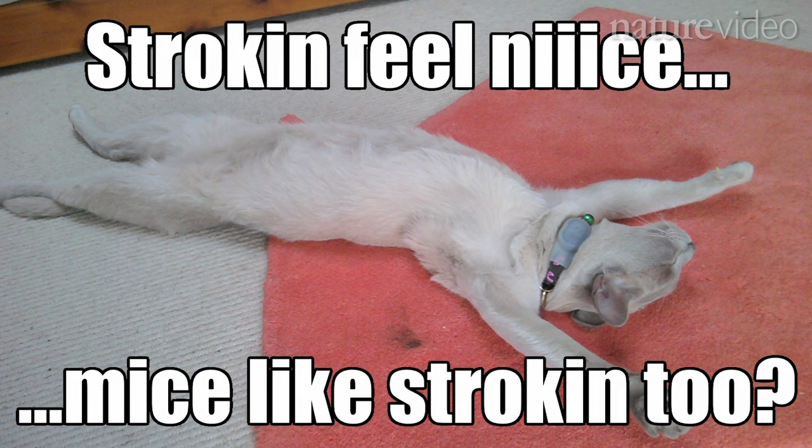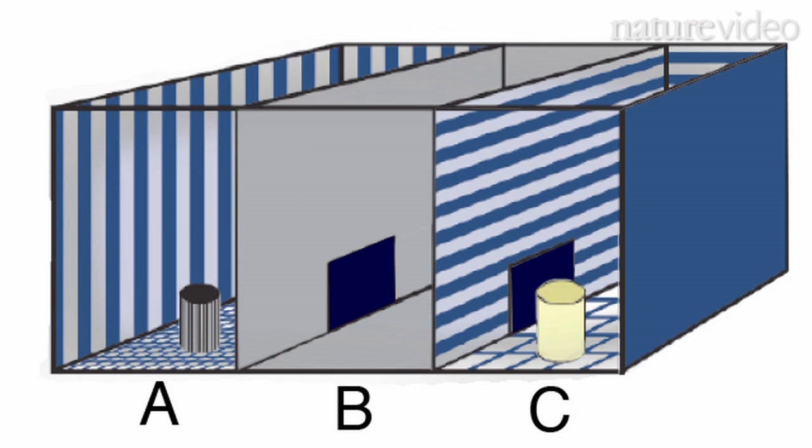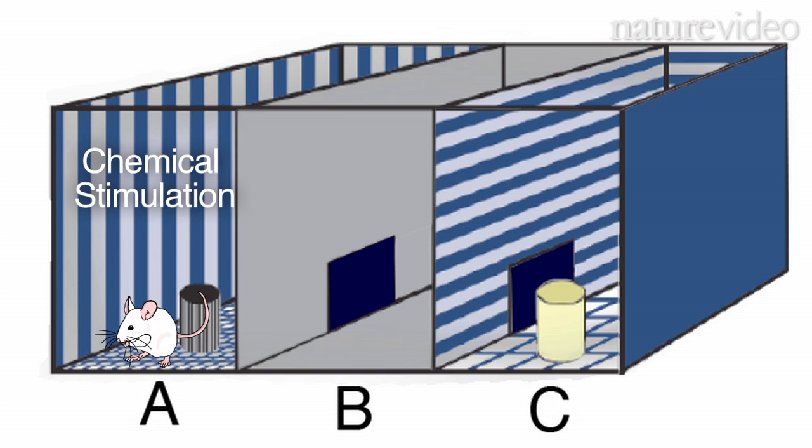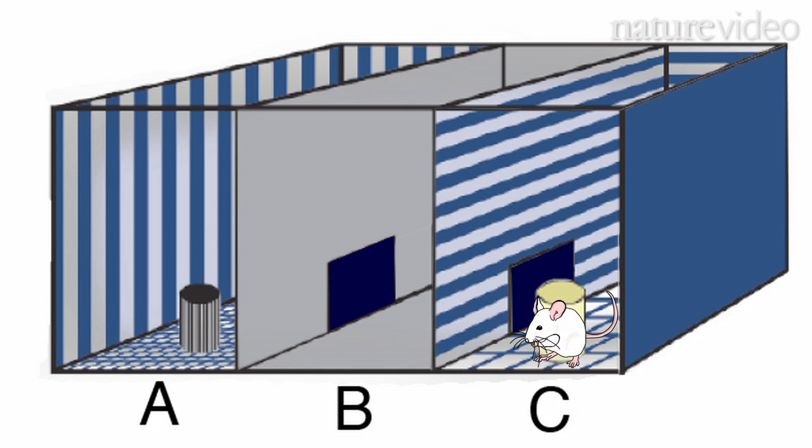That's what the scientists wanted to know. So they set up a test. On day one, they shut the mice in room A and gave them a drug that stimulated their stroking neurons. On day two, they shut the mice in room C and gave them saline solution, designed to have no effect. They alternated between rooms for several days.